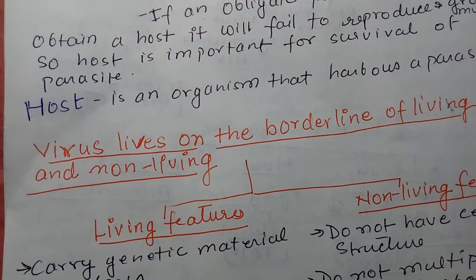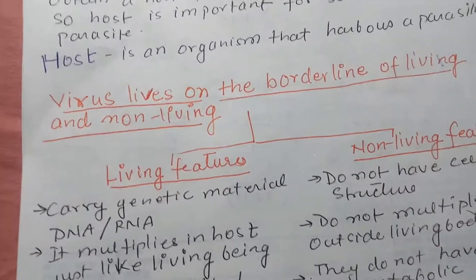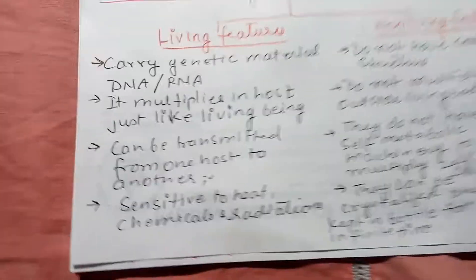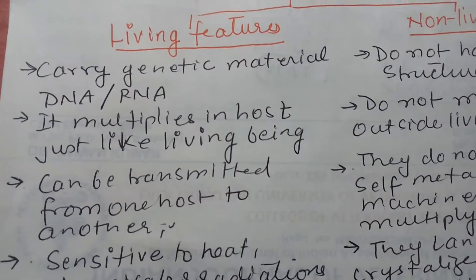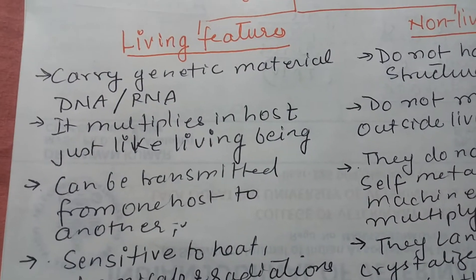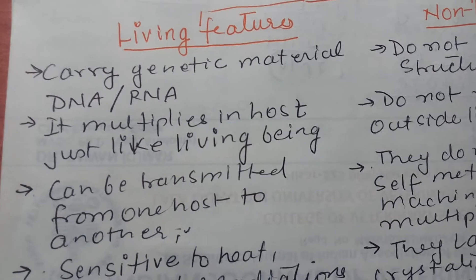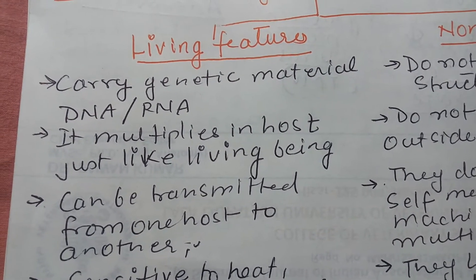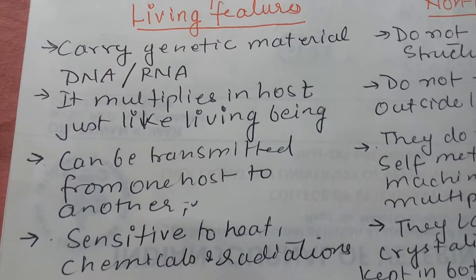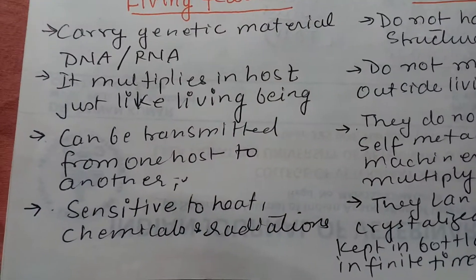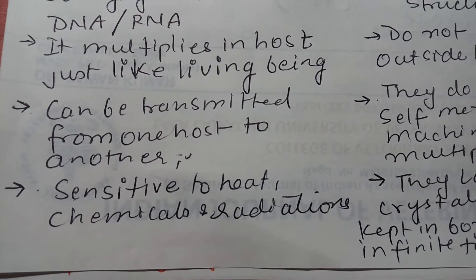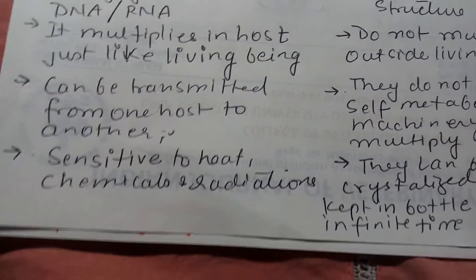Now let us understand why we say virus lives on the borderline of living and non-living, because they exhibit both features. Looking at living characteristics: just like living organisms, they have genetic material and are able to multiply it, but their mode of multiplication is different — they multiply their genetic material in a suitable host. They can also be transmitted from one host to another, and they are sensitive to heat, chemicals, and radiation.